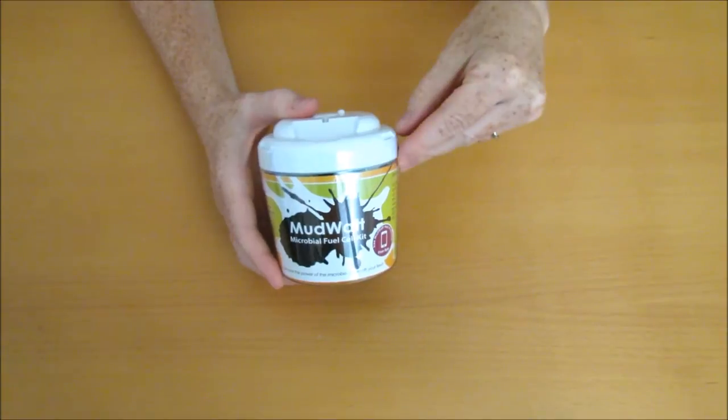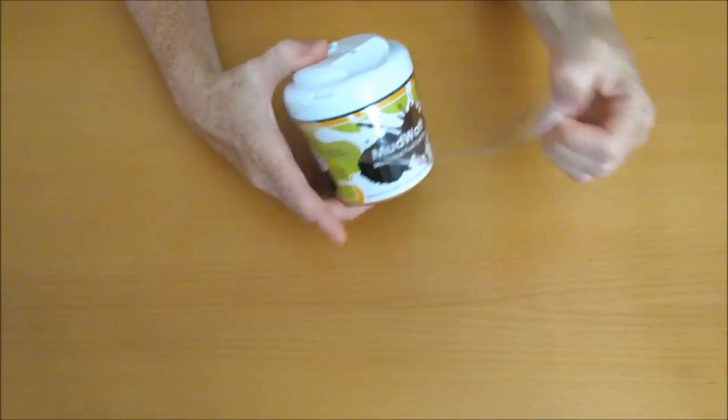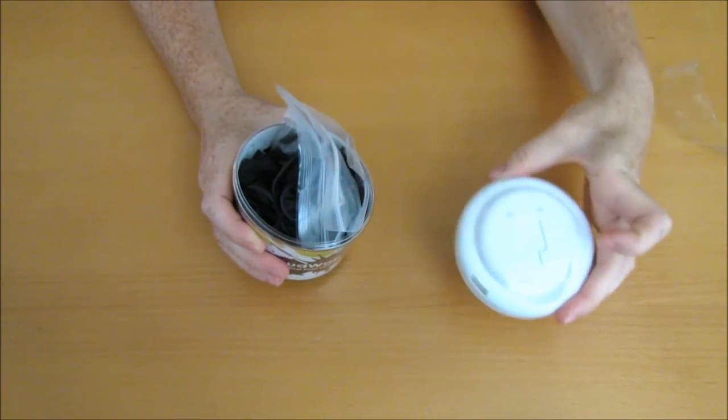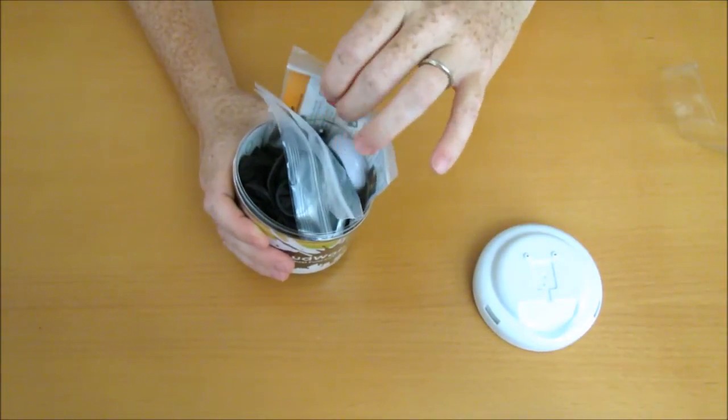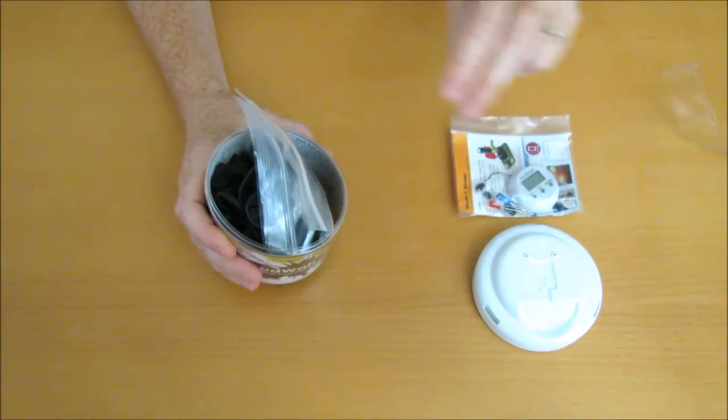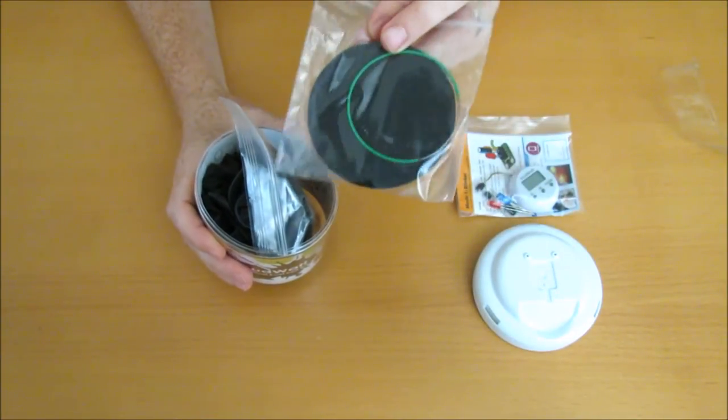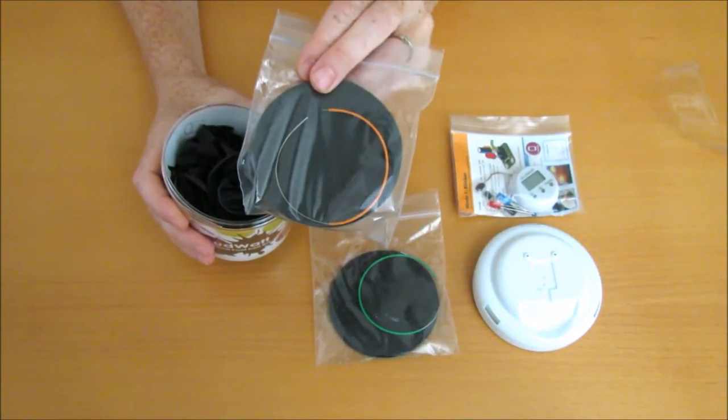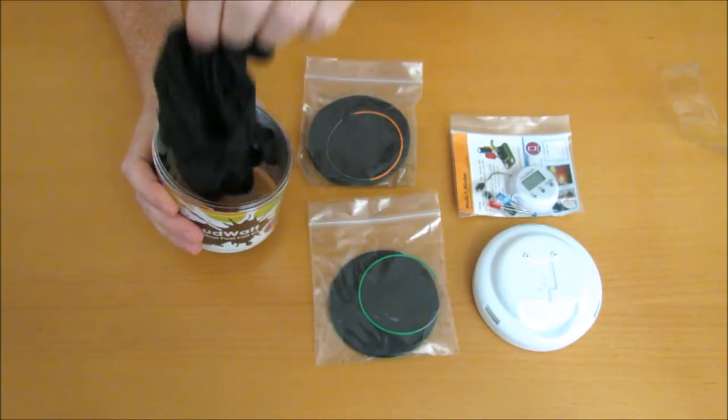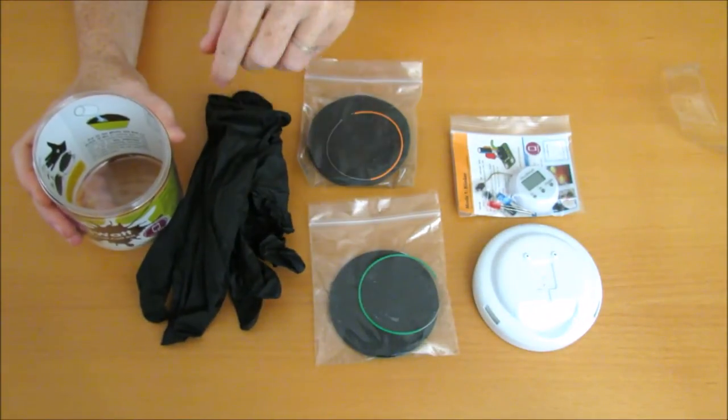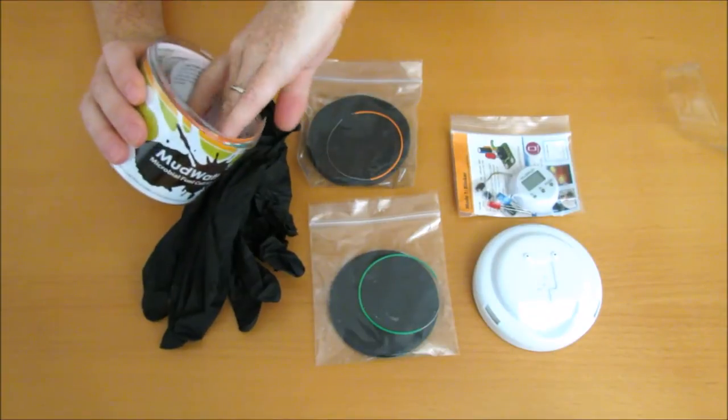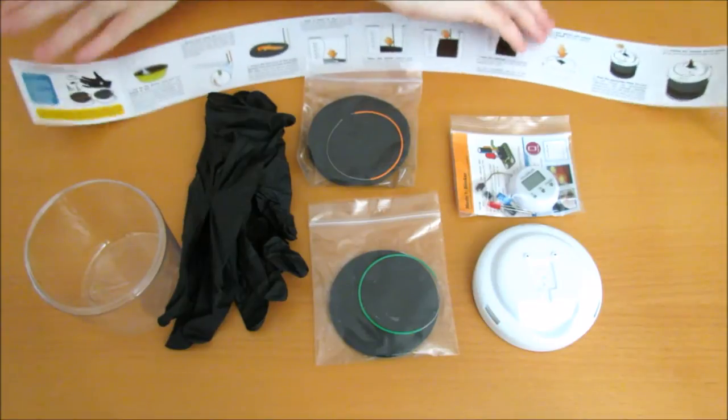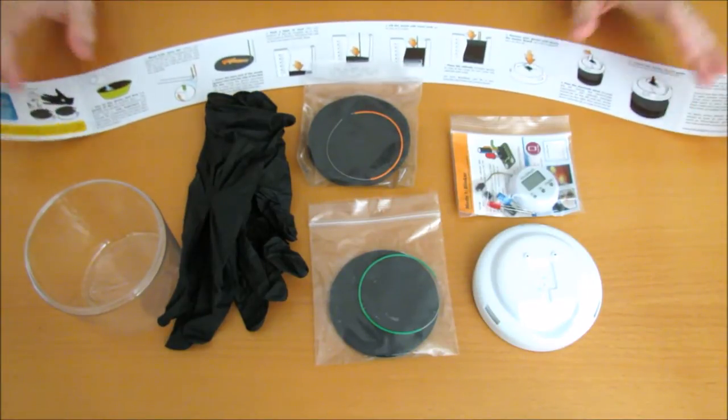First of all, let's make sure we have all the parts. We have our lid here, our hacker pack, our anode with the green wire, our cathode with the orange wire, our nitrile gloves, our instructions, and our container.